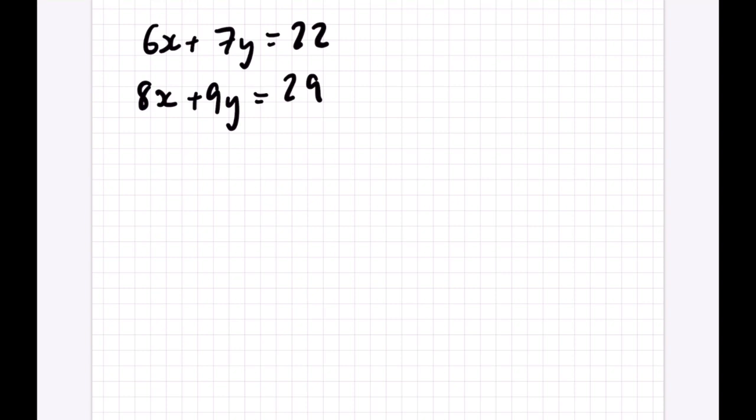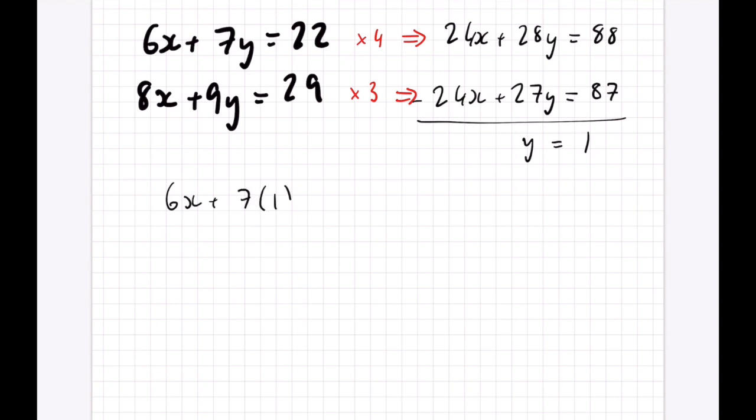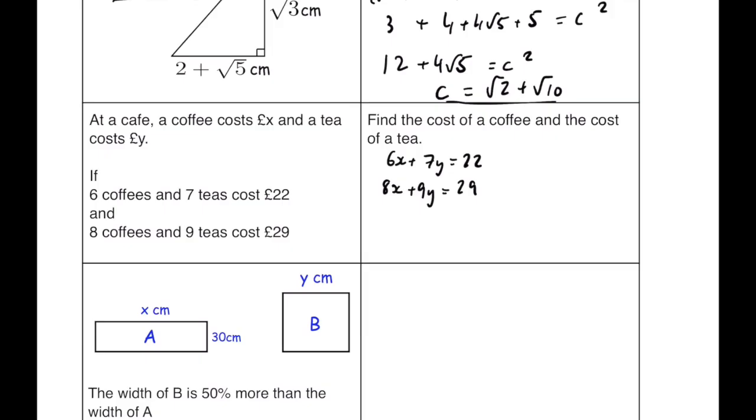I've just put this on a fresh page so that we can have plenty of space to do our workings. We need to find a multiplier so that we can make either the x's or the y's the same. In this case I'm going to make the x's the same equation. So we can make both the x's 24. If we multiply this by 4, this by 3, that's going to give us 24x plus 28y equals 88. Always remember to multiply the entire equation. 24x plus 27y equals 87. Now from there we can take away the x's because they will cancel out, leaving us with y equals 1 because 88 take away 87. And then if we go back to our original equations, 6x plus 7 lots of 1 is equal to 22. So 6x plus 7 equals 22. 6x equals 15 pounds. So x is equal to 2 pounds and 50 pence. So a coffee would be 2 pound 50 and a tea would cost 1 pound.